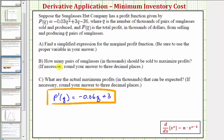And now for part B, we're asked how many pairs of sunglasses in thousands should be sold to maximize profits. So the first step is going to be to find the critical numbers, which is where the first derivative is equal to zero or undefined. So let's find our critical numbers on the next slide.